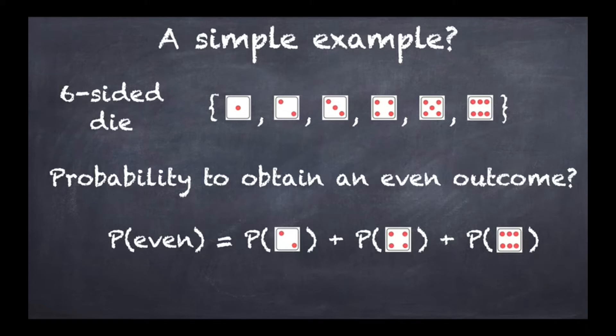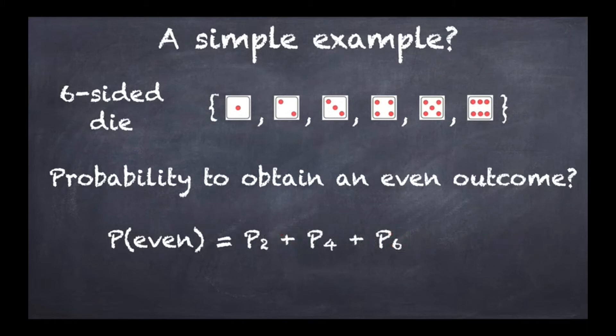In terms of what we've seen, this looks like p2 plus p4 plus p6. From probability theory alone, the only thing we can get is this particular general equation: the probability of getting an even number is the sum of these three probabilities for a six-sided die.